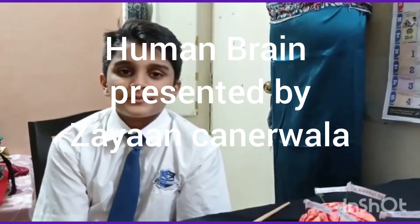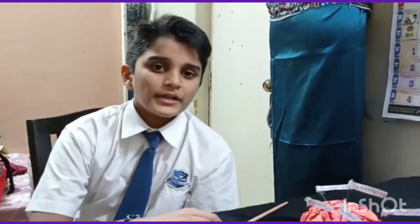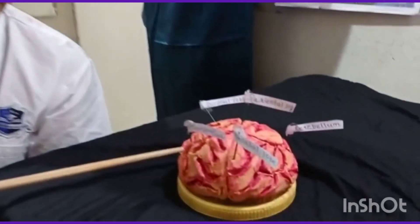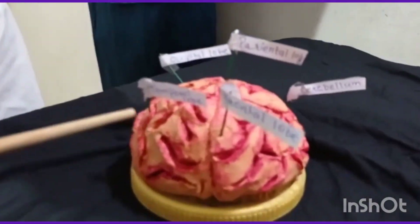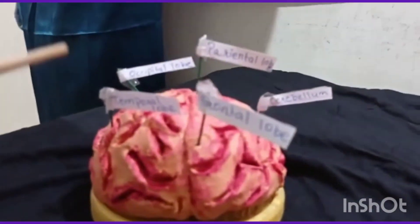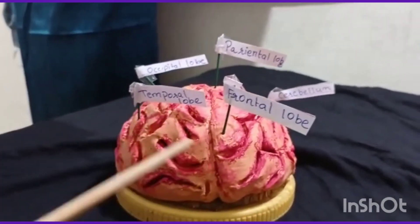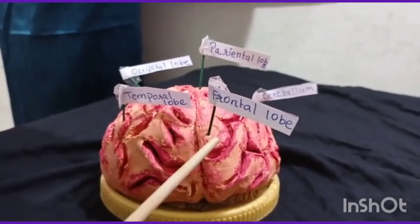Hello everyone. My name is Jan Kanera. I am a student from Ocean Bright High School. Today I am going to explain about my science exhibition project — a human brain model. A human brain model has five parts.